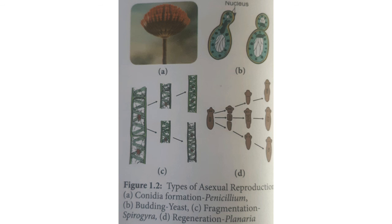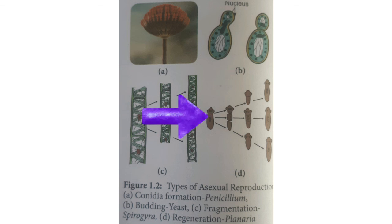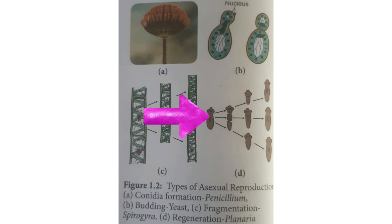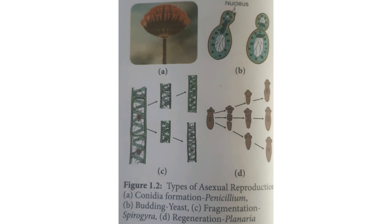The last type is regeneration, which occurs in Planaria. The Planaria divides into head, stomach and tail — three body parts. The head regenerates stomach and tail to form a new Planaria. The stomach regenerates head and tail to produce a new Planaria. The tail regenerates stomach and head to produce a new Planaria. From one organism, three organisms develop. This is called regeneration.